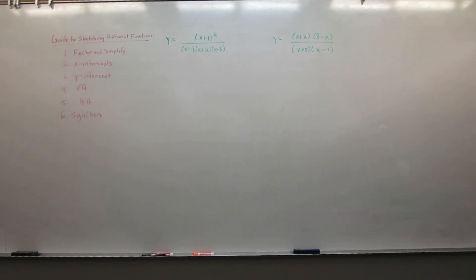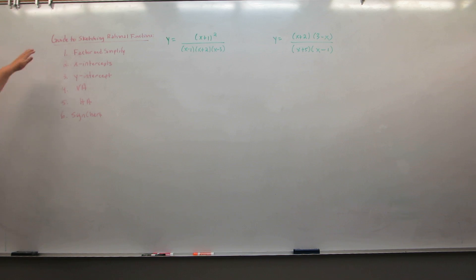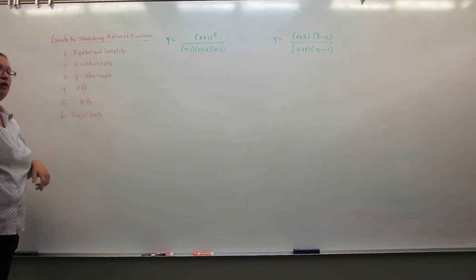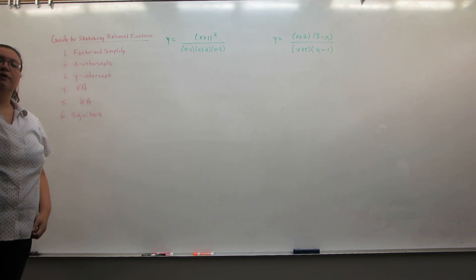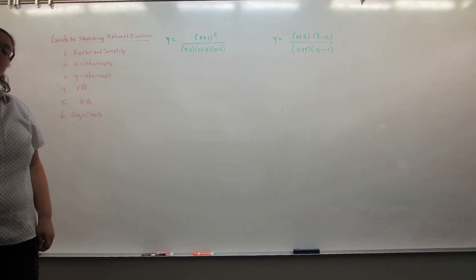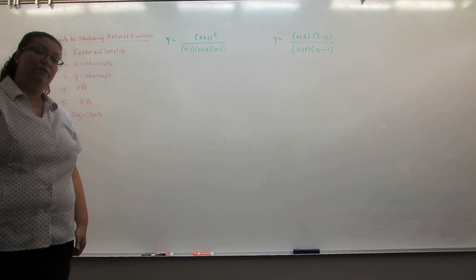Now we're going to learn how to graph rational functions. There is a six-step process that will always give you a graph of a rational function.